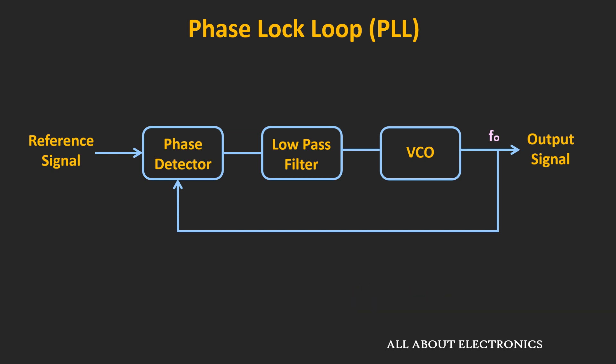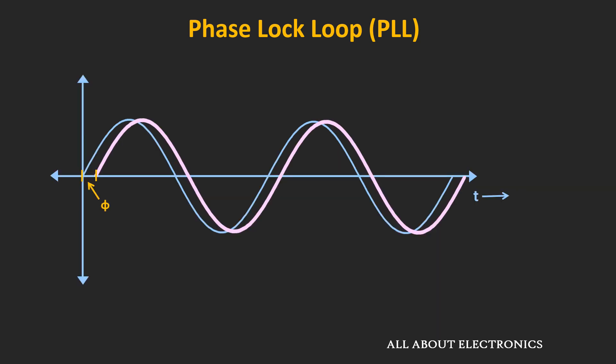The phase detector compares the input or reference signal with the oscillator frequency and based on that, it generates an error signal. This error signal is passed through the low-pass filter, which generates an error voltage. Based on this error voltage, the VCO either increases or reduces the oscillator frequency until it locks to the input frequency. Under the lock condition, there may be no phase difference or a constant phase difference between the two signals.